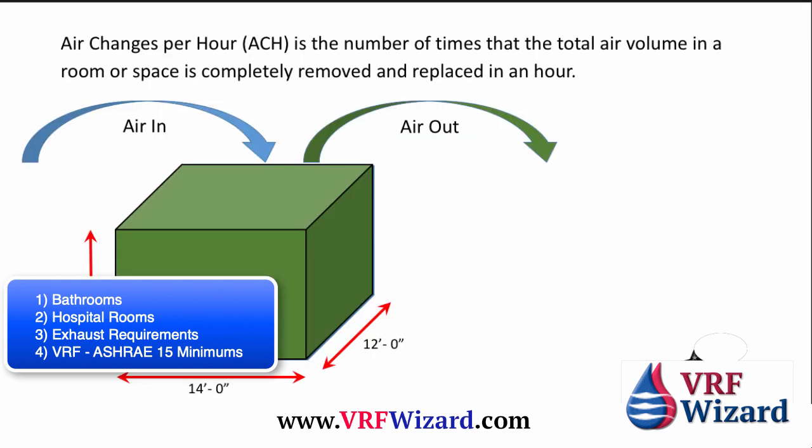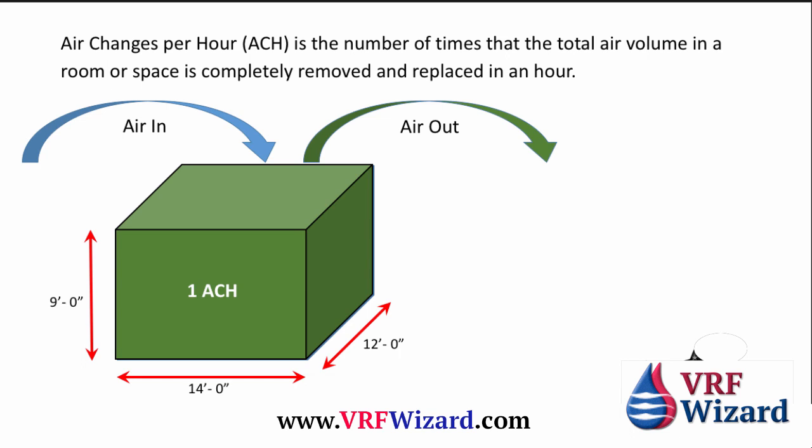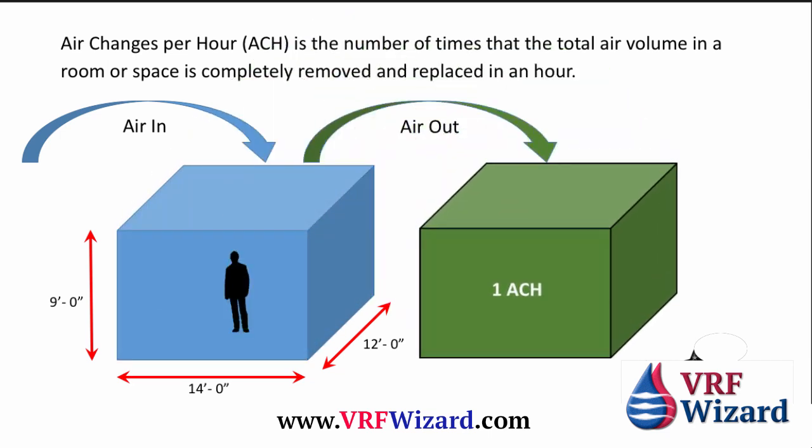Air changes per hour is the number of times that the total air volume in the room or space is completely removed and replaced in an hour. So how many air changes in an hour? That would be one air change if I took all the air out of the room in an hour. And of course, when you take out air, it gets replaced with air. So if I take all the air in the room out within 60 minutes, that's one air change in an hour.